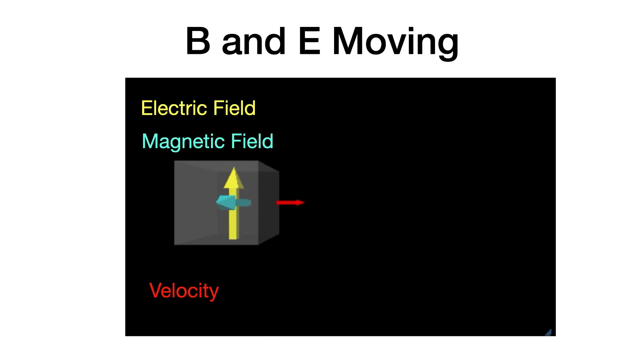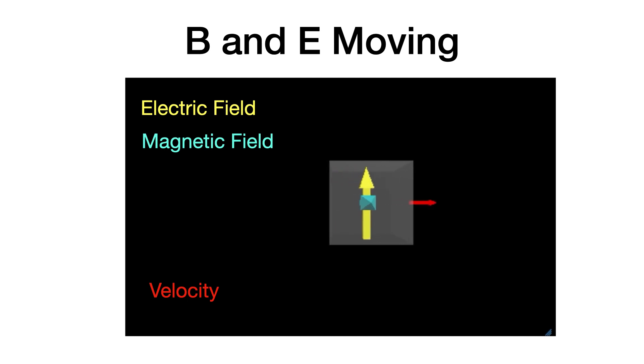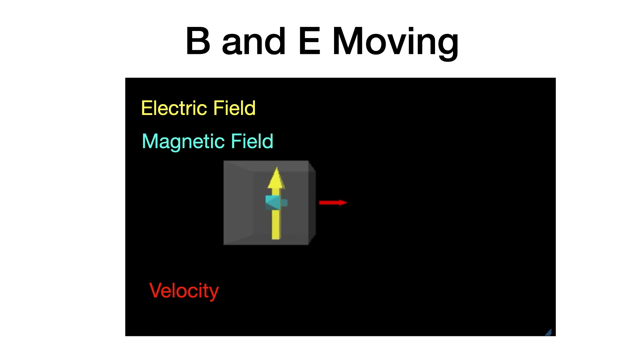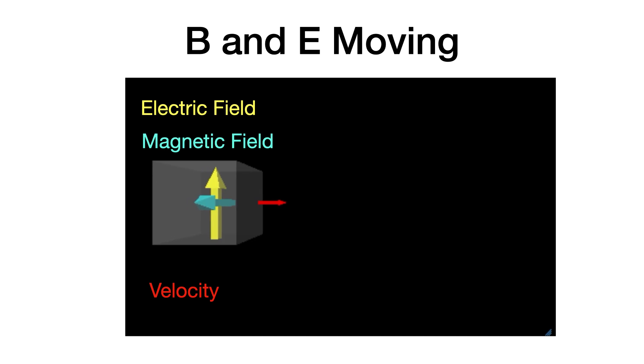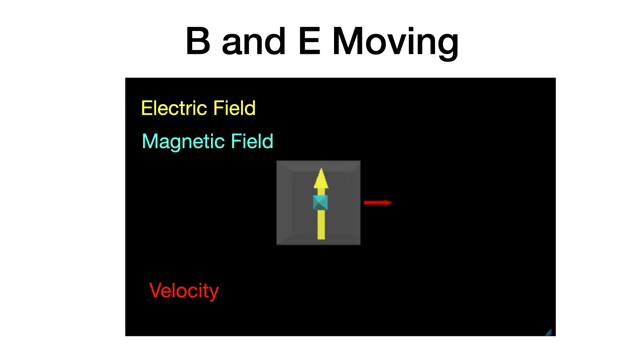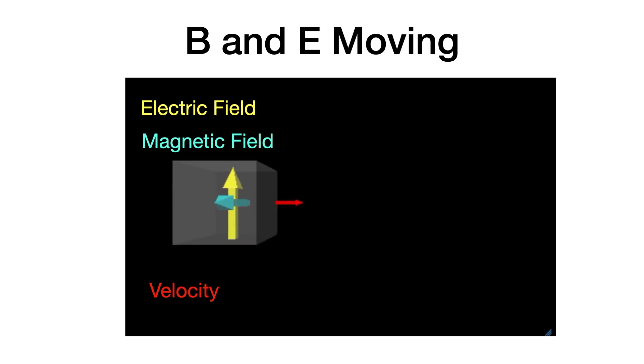Let's look at an example. Here is a region of space. It has an electric field pointing up and a magnetic field pointing out of the screen. This region is moving to your right at some velocity V. So we have three things: electric field, magnetic field, and velocity.